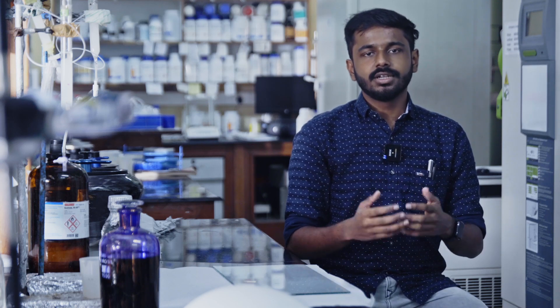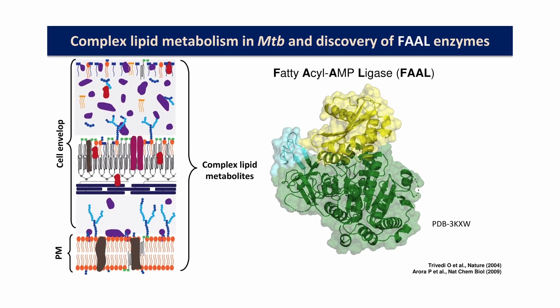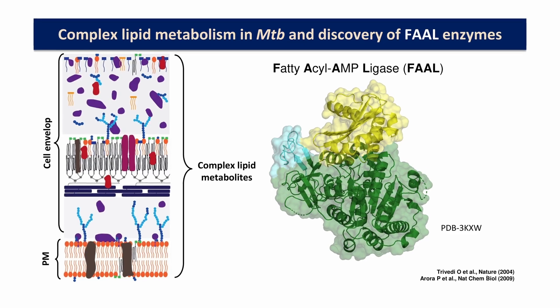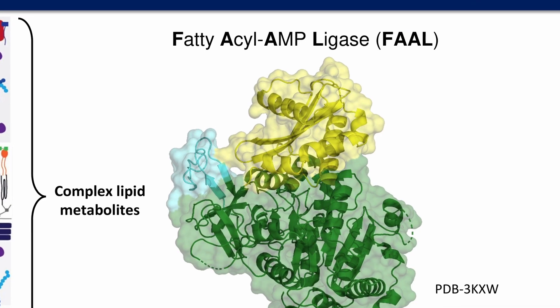All life forms are made up of cells, and these cells are encompassed by membranes. Membranes are made up of a class of molecules called lipids, and fatty acids are a major constituent of lipids. We study a class of proteins called fatty acyl-AMP ligases — FALs in short — that activate these fatty acids and transfer them to a class of multi-enzyme complexes called polyketide synthases and non-ribosomal peptide synthetases.